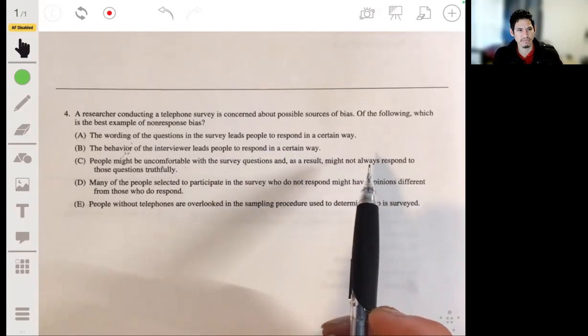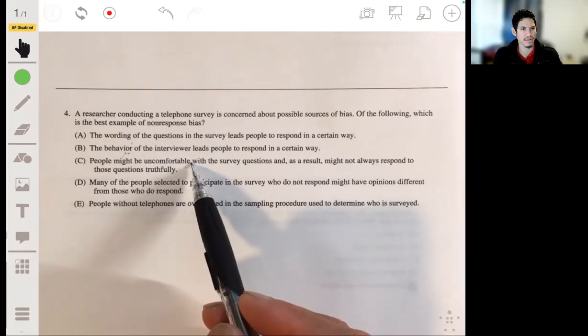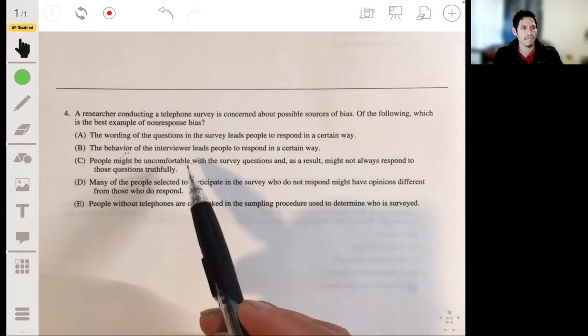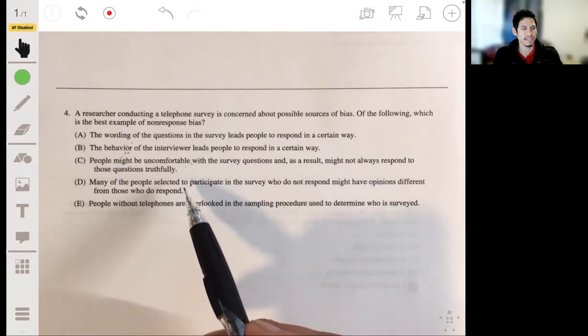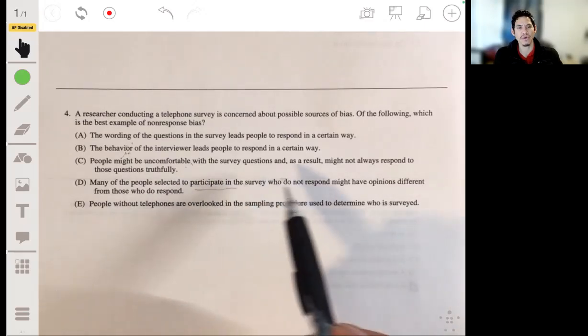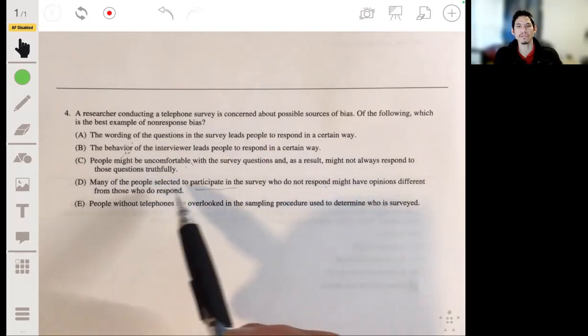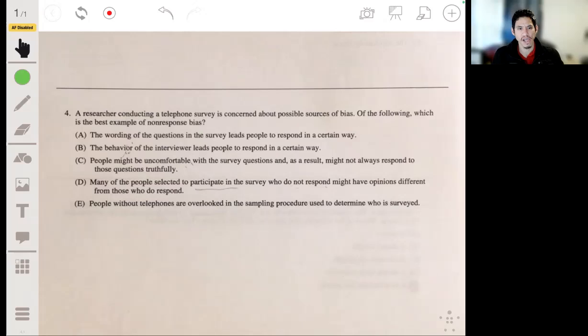Okay, this is probably going to be another common mix of answers. D - so you really look at: many people selected to participate in the survey who do not respond might have different opinions from those who do respond.